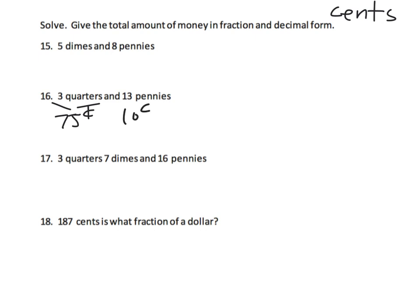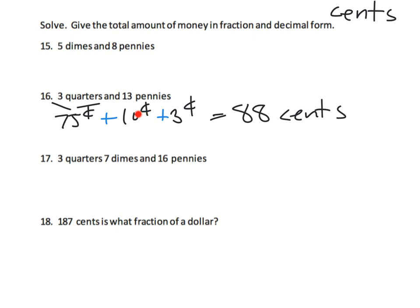We can think of 13 pennies as a dime plus three extra pennies. Adding it all together: 75 plus 10 is 85 cents, plus 3 more cents equals 88 cents. I'm mixing and matching labels — using the symbol in some places and the word in others — and that's perfectly fine.